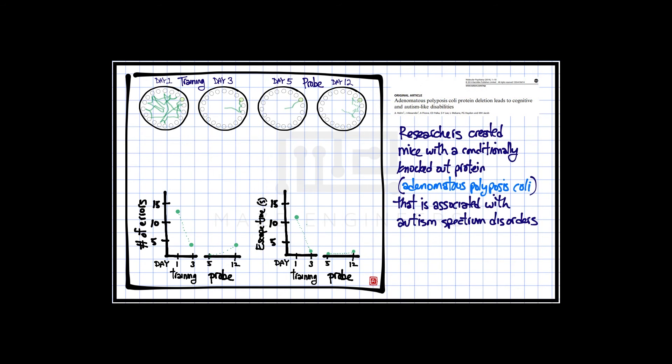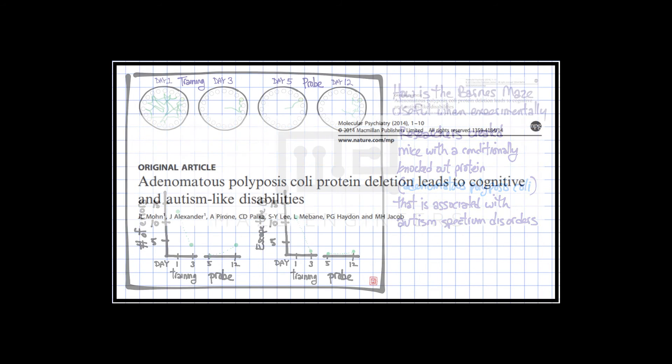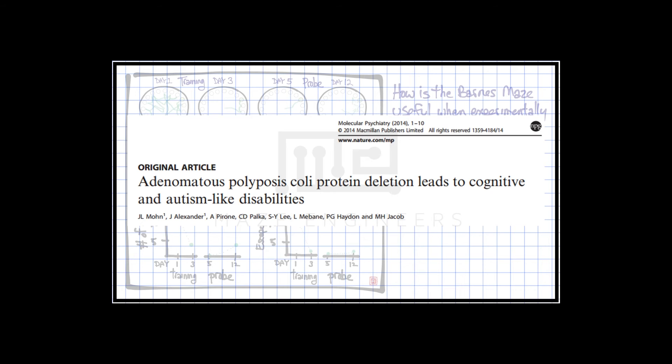Researchers created mice with a conditionally knocked out protein, adenomatous polyposis coli, that is associated with autism spectrum disorders.